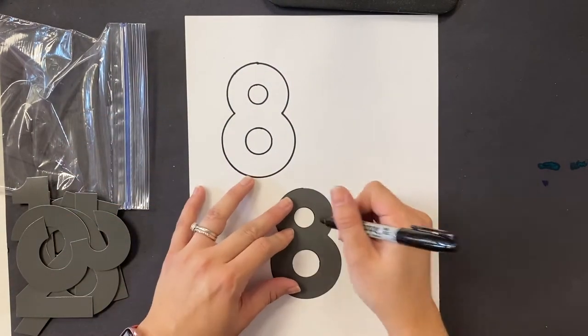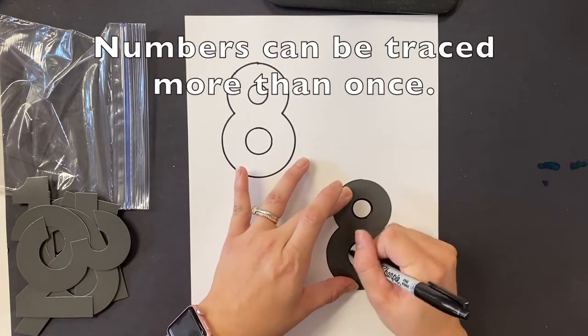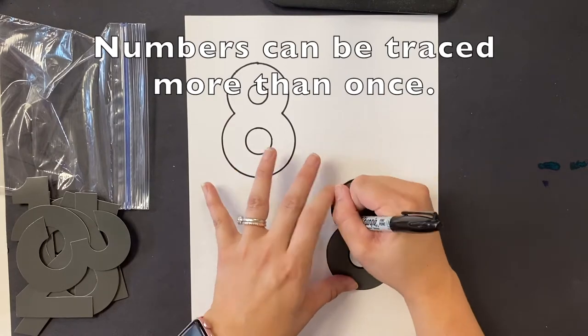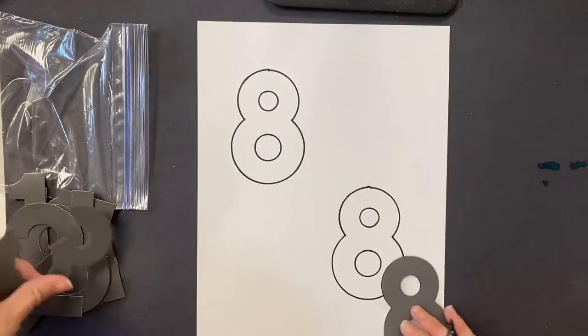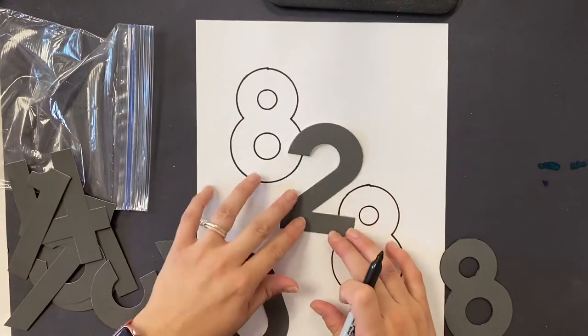You can trace the numbers more than once and in different places on the paper. Overlap your numbers to make different shapes.